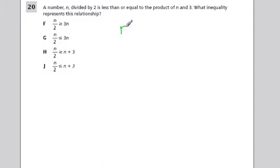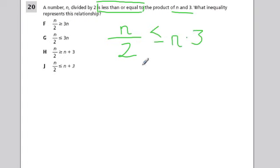A number n divided by 2, we often forget I think that just writing a fraction like this means n divided by 2, is less than or equal to. The keyword there is is, we know we're relating this expression to something else. So it's less than or equal to the product of n and 3. Let's say that again: a number n divided by 2 is less than or equal to the product of n and 3, and they're writing it like this. n times 3 can be written as 3 times n, that's the commutative property, we can change the order and it won't change the product.